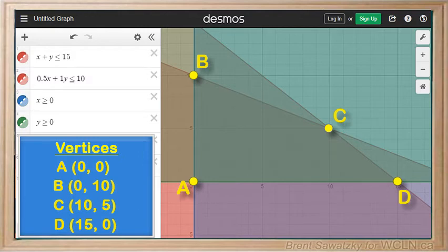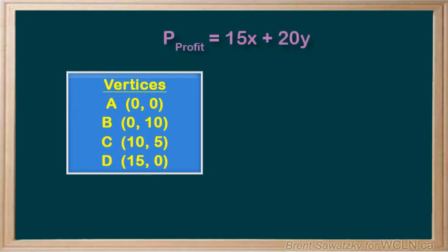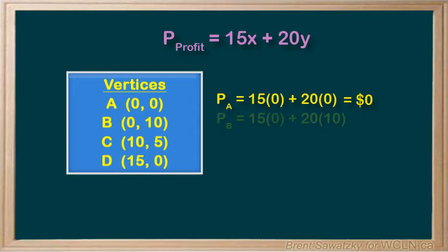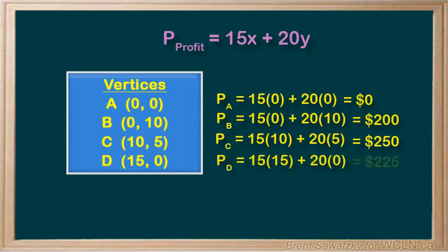These four vertices represent Carol's maximum and minimum profits — we just need to determine which is which. Using our profit equation p = 15x + 20y at each vertex: point A gives $0 — no jewelry, no profit. Point B, all necklaces, gives $200. Point C, with 10 earrings and 5 necklaces, gives $250. And point D, all earrings at 15 sets, gives $225.